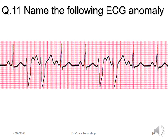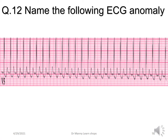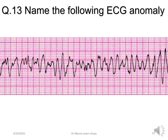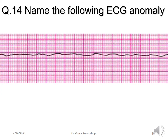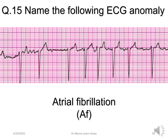Let's see whether you remember now. Name the following ECG anomaly — premature ventricular complexes, and these are couplets. What about this anomaly? There's a supraventricular tachycardia. How about that one? This is coarse ventricular fibrillation. Can you name the following ECG anomaly? This is asystole. What about this one? This is atrial fibrillation with a controlled ventricular response.